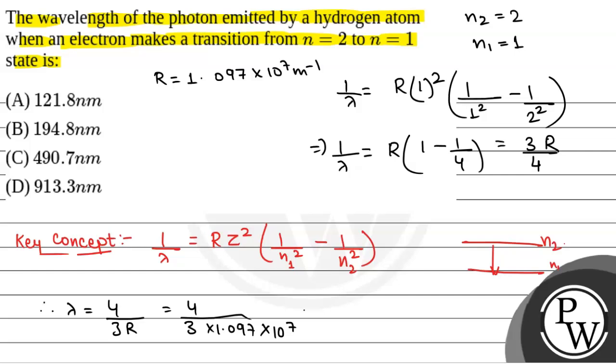So this will be 1.8 times 10 to the power minus 9 meter, which is equal to 121.8 nanometer. So the correct option will be option A, which is 121.8 nanometer.